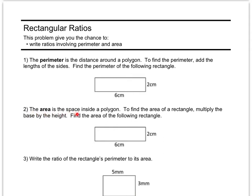It says the area is the space inside a polygon. To find the area of a rectangle, multiply the base by the height. I like to say multiply two sides that share a corner. So the area of this rectangle would be 2 times 6.